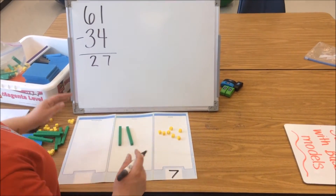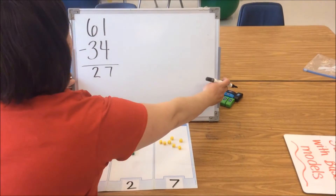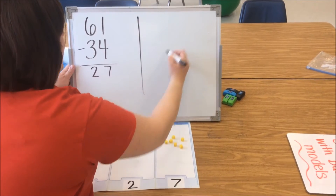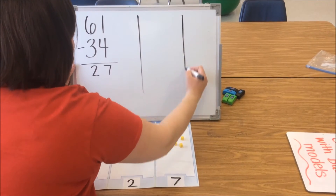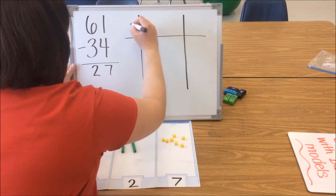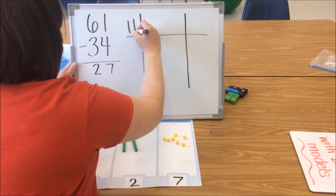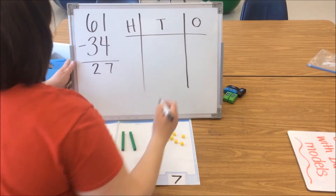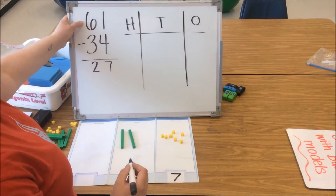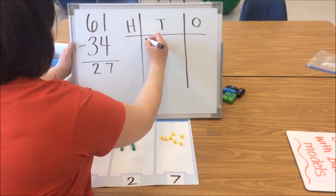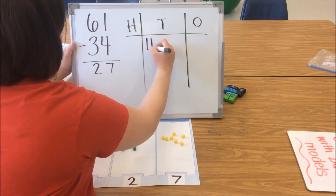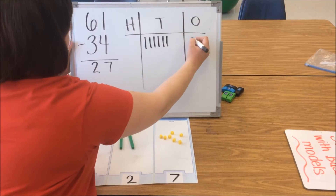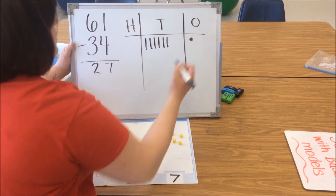Now we're going to show you how a student could model that using their HTO chart. Again, they start with their hundreds, tens, and ones — H, T, O. We start by modeling our first number 61: 10, 20, 30, 40, 50, 60, 61.